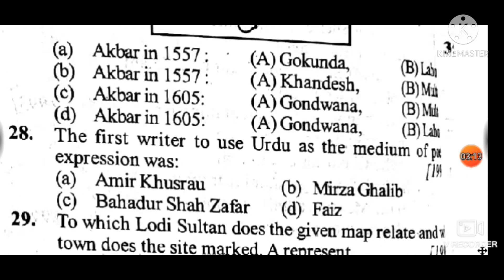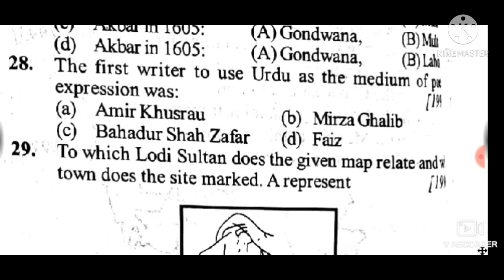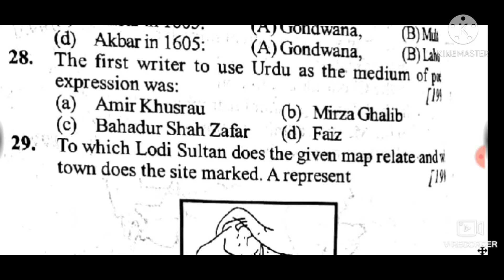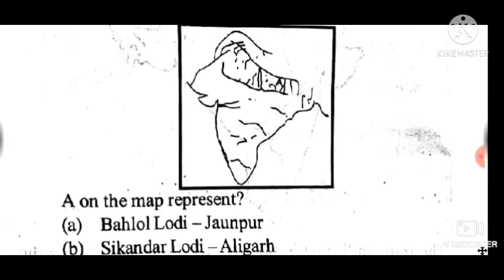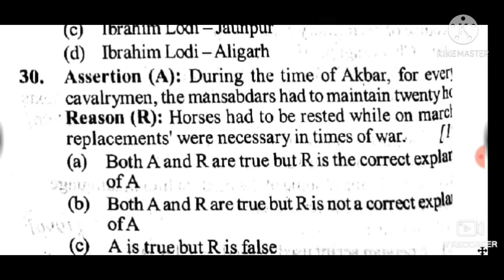Question 28: The first writer to use Urdu as a medium of poetic expression was — answer to question 28 is A: Amir Khusrau. Question 29: To which Lodi Sultanate does the given map relate and which town does the marker A represent? Answer to question 29 is A: Bahlul Lodi; A is Jaunpur, which was controlled by Bahlul Lodi at the time.